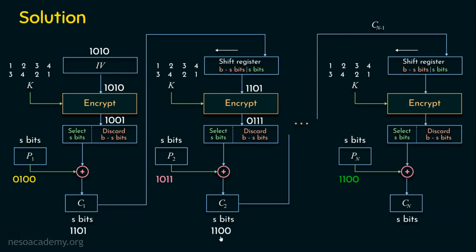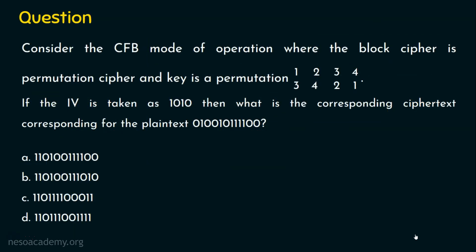C2 = 1100 acts as input for the next block. The encryption algorithm takes 1100 and applying the same key — third bit 0 first, fourth bit 0 second, second bit 1 third, first bit 1 fourth — produces the transformed output 0011. Performing XOR between 0011 and P3 = 1100, we get C3 = 1111. So the complete ciphertext is C1 C2 C3 = 1101 1100 1111. Looking at the options, the exact matching answer is option D. The right answer for this question is option D.